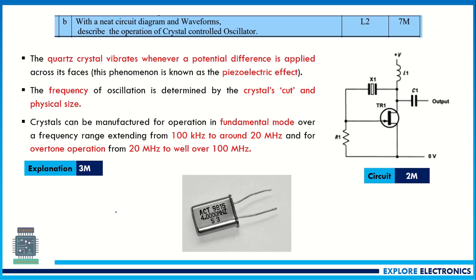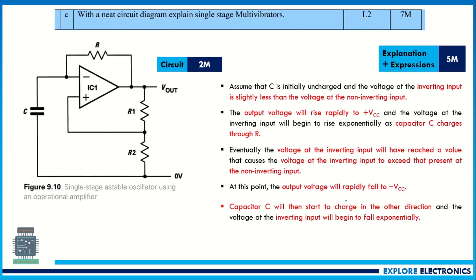The next question is on crystal oscillator. You need to write the diagram and waveform. Explain how the quartz crystal works to generate oscillations using the piezoelectric effect. The frequency is determined by the crystal cut and the physical size of the device. Explain the circuit, the frequencies it generates, and write the waveform of the crystal oscillator. This question carries 7 marks.